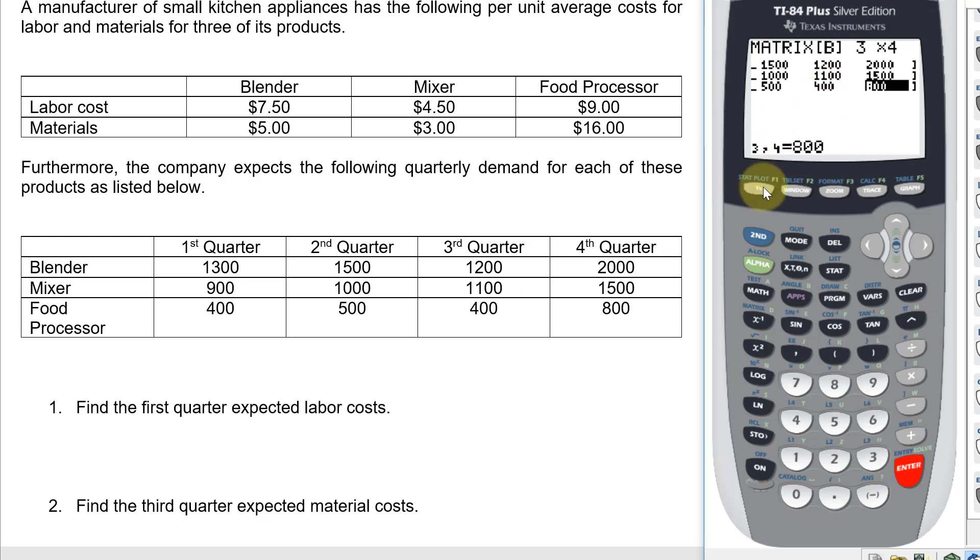So take matrix A, multiply with matrix B. Okay, so these represent along the top row total labor costs in each quarter.